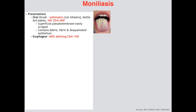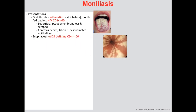Next is Candida esophagitis. At risk are AIDS patients whose CD4 T-cell count is below 100. Clinically they present with odynophagia — pain on swallowing — dysphagia, and retrosternal pain. Diagnosis is on endoscopy, as seen in the picture on the right, where you can see colonies of Candida growing in linear lines.